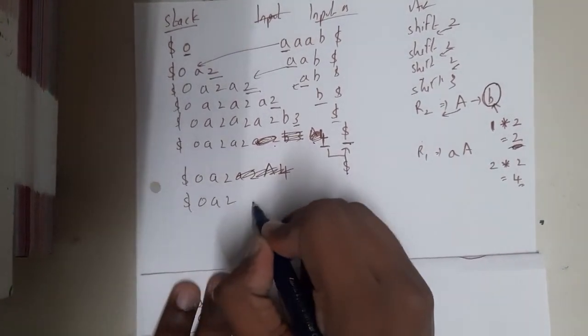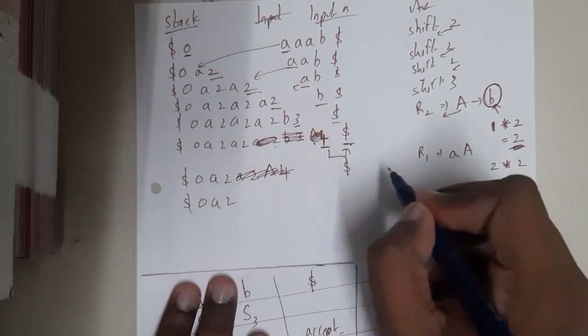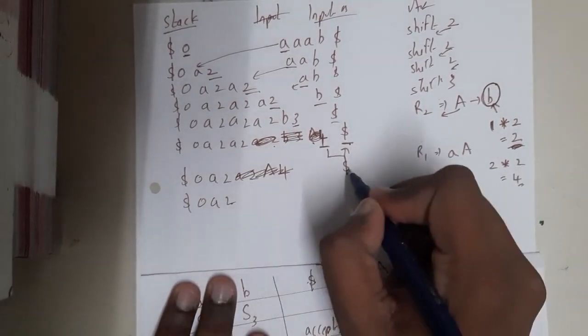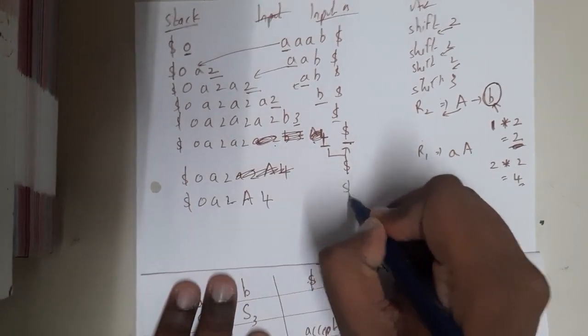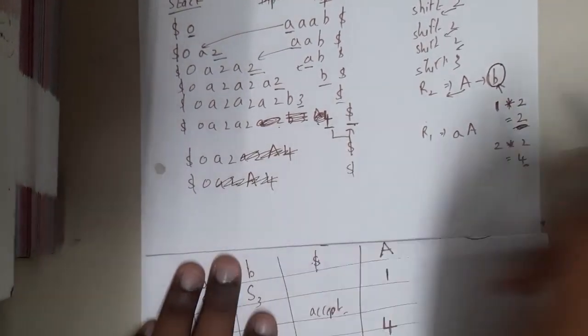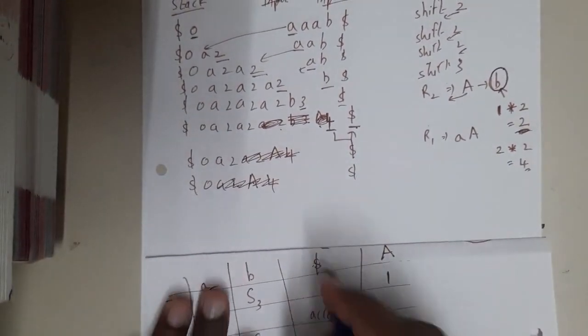Okay, so again you will be checking a 2. You'll be pushing a capital A, and 2 on a is a 4. Again you are having dollar. Again 4 elements will be popped, guys. So again 4 elements will be popped. At the end you reach it to 0 and you are checking it to dollar.